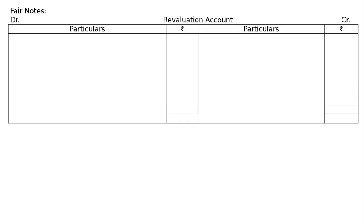Revaluation account: By plant and machinery Rs. 12,000 — plant and machinery revalued at Rs. 60,000, given in the question at Rs. 48,000, so increase in asset is a profit. Then stock Rs. 40,000 — stock is given to us at Rs. 32,000, so by stock Rs. 8,000 increase.